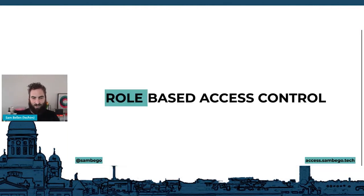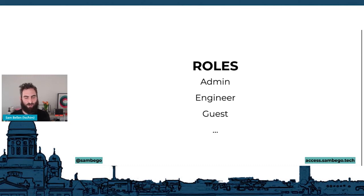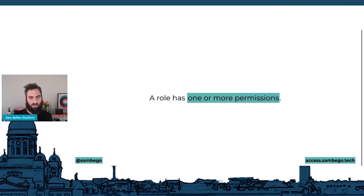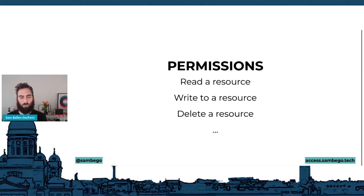That 'something else' might be RBAC — role-based access control — where instead of using attributes or policies, we use roles. A user can have one or more roles depending on how complex your system is. Common roles might be admin, engineer, or guest. These roles can then have one or more permissions assigned to them — for example, to read, write, or delete a resource.